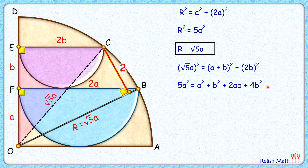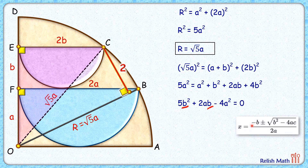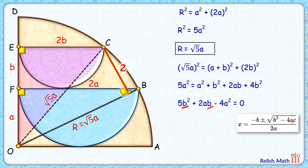Taking everything to the LHS and simplifying, we get an equation which we treat as a quadratic with variable b, keeping a as a constant. Applying the quadratic formula — x = (−b ± √(b²−4ac)) / 2a, where a, b, c are the coefficients of x² and constant terms — we get the value of b as a · (√21 − 1) / 5.